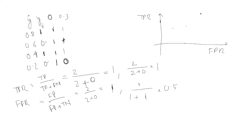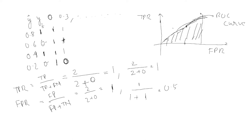You keep changing the threshold and for each one you get a pair of TPR and FPR values. Once you plot all these points and join them, you get the ROC curve. The area enclosed under this curve is called the AUC — area under curve. This is how you construct and compute the AUC ROC.